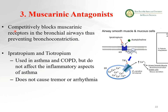The third class of bronchodilators is muscarinic antagonists. Parasympathetic agonists cause bronchoconstriction, so we need muscarinic antagonists to block muscarinic receptors on the bronchioles and prevent bronchoconstriction. The drugs in this class — ipratropium and tiotropium — are used in asthma and COPD, but do not affect the inflammatory aspect of asthma. An advantage over beta-2 agonists is that they do not cause tremor or arrhythmia.